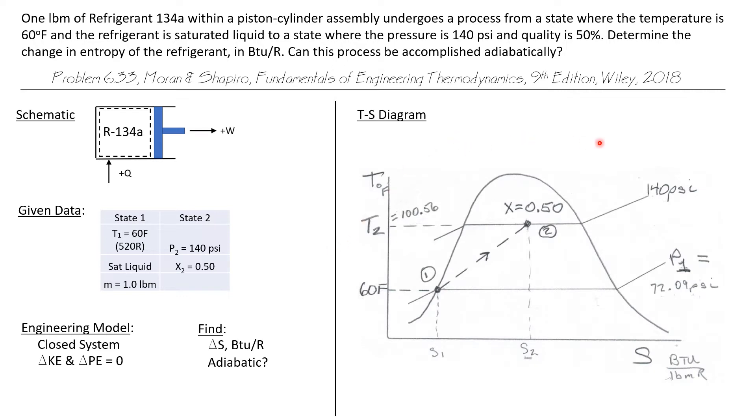So let's draw a T-S diagram for this process. We have our vapor dome and state one exists at 60°F as a saturated liquid, so state one is right here on the saturated liquid line. State two exists at a pressure of 140 psi, so I'm laying in this 140 psi constant pressure line here, and state two is given as a saturated mixture with a quality of 50%.